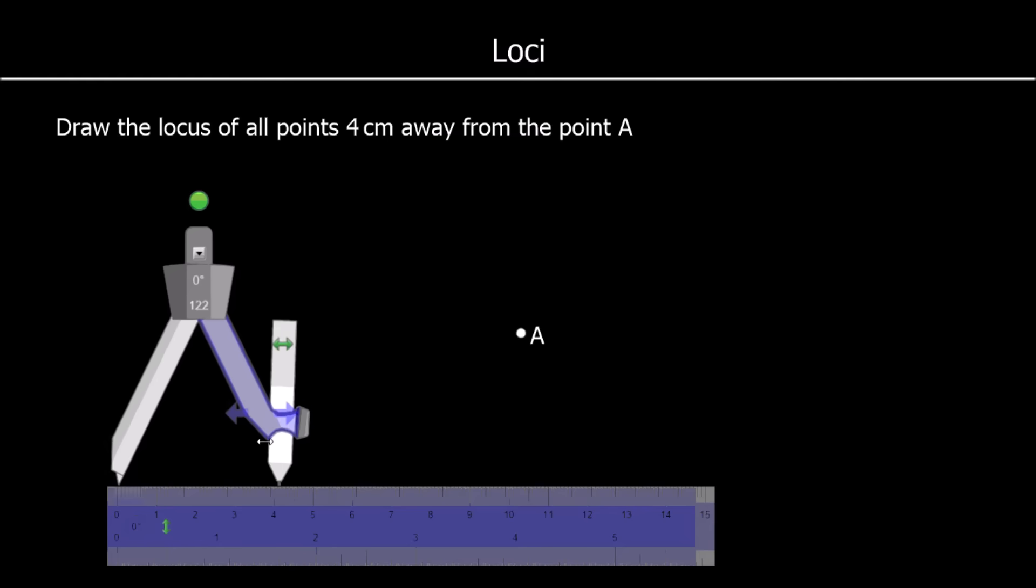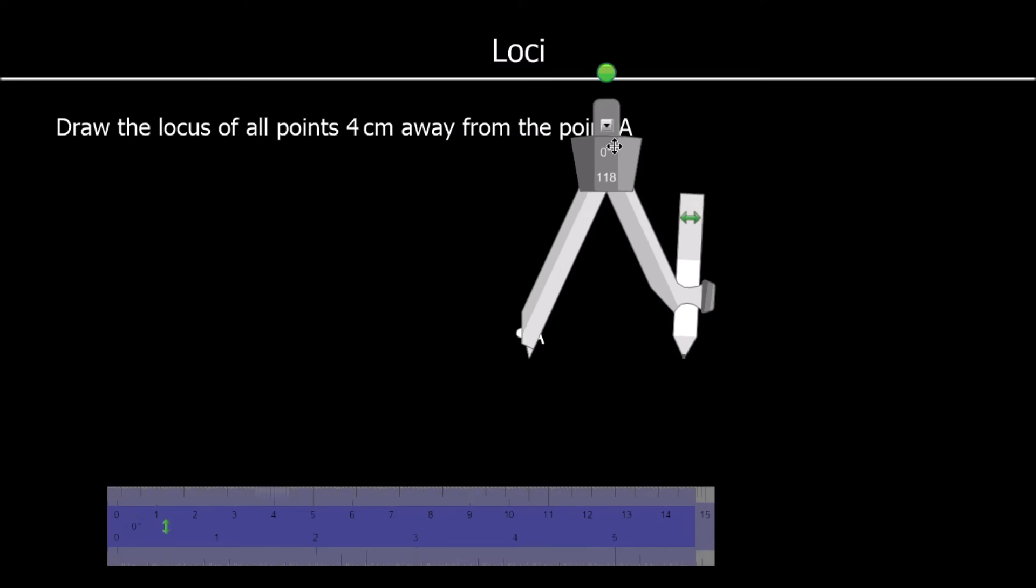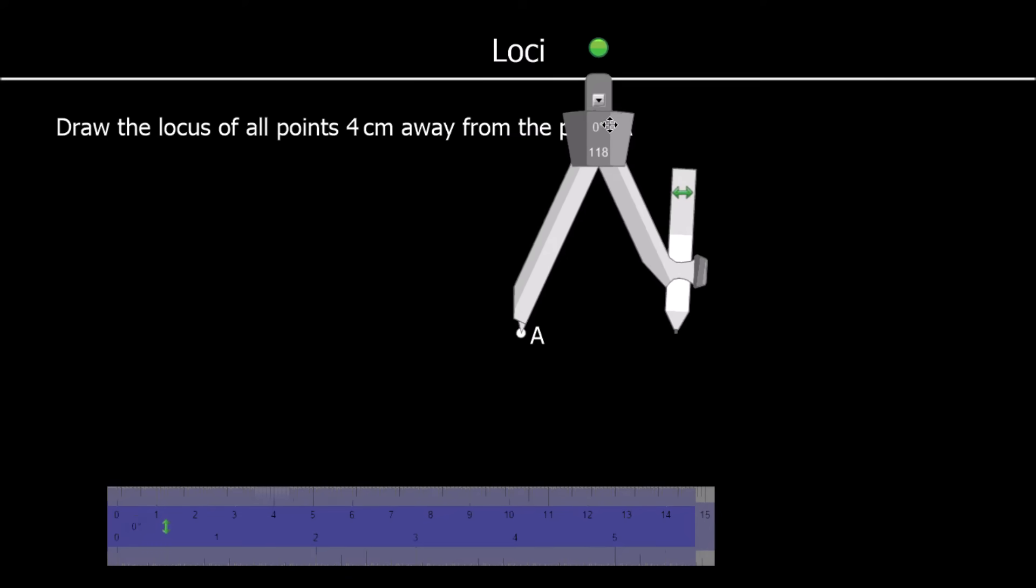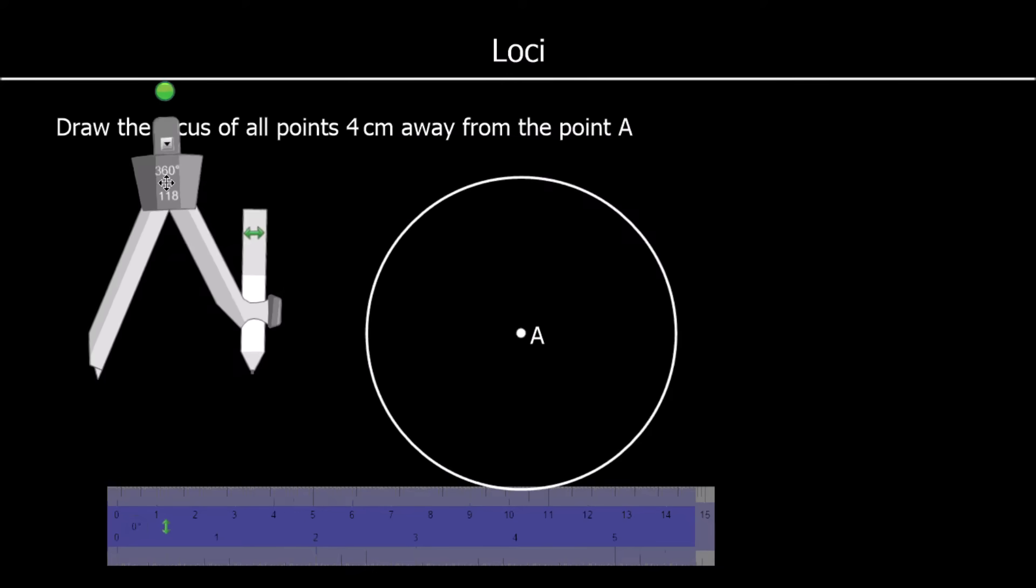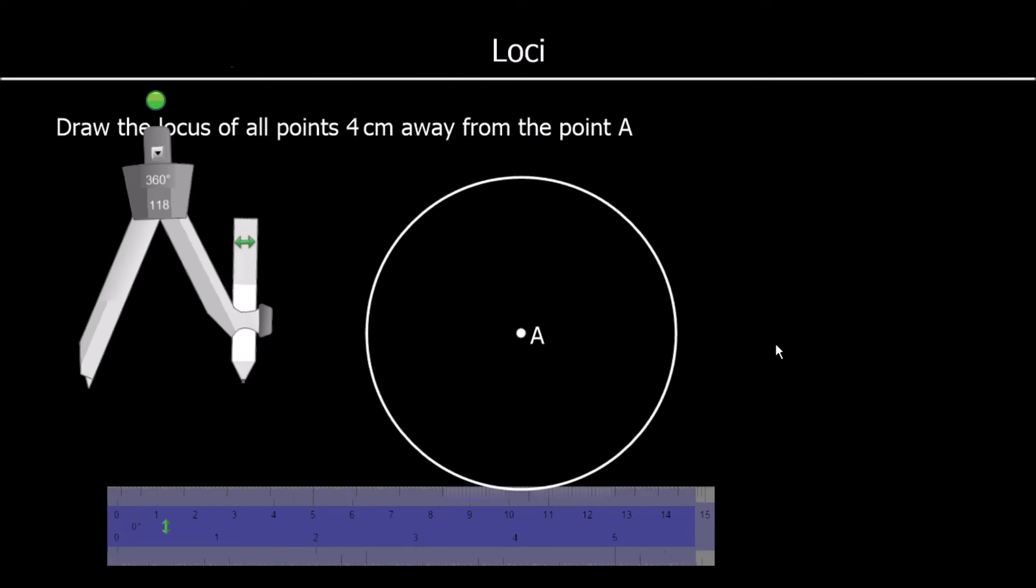We're going to make it 4 cm long, and we're going to place the center of it at A. Then we draw around in a circle. And there we have all of the points 4 cm away from A.